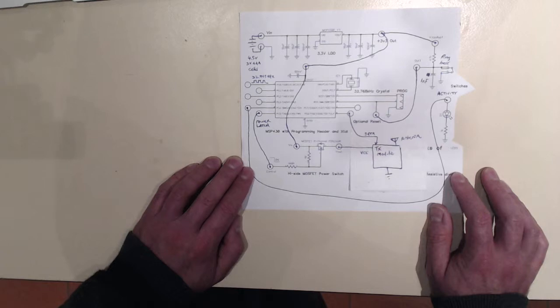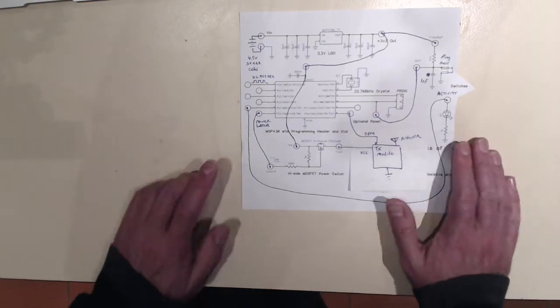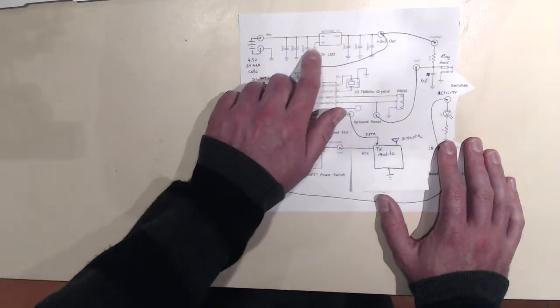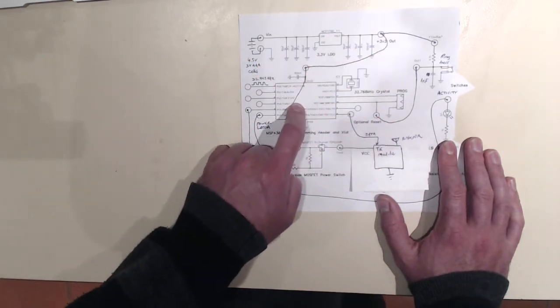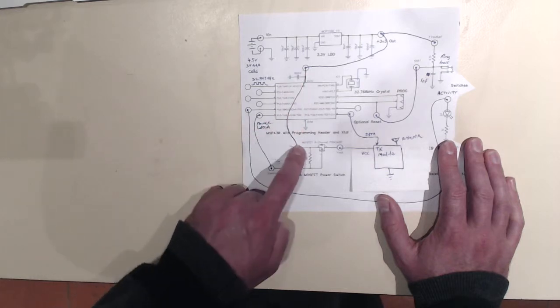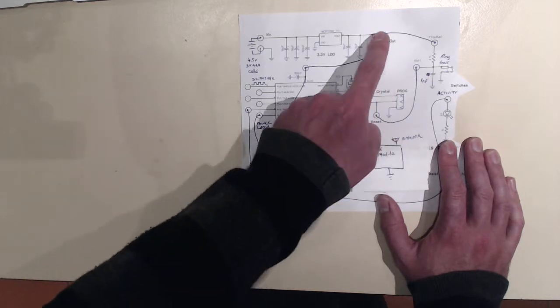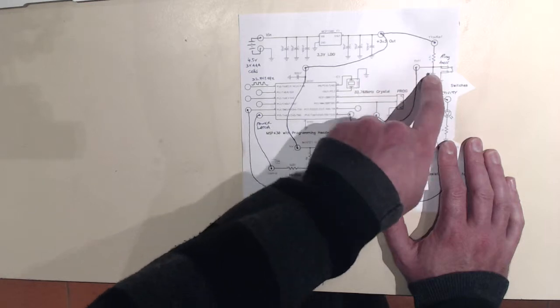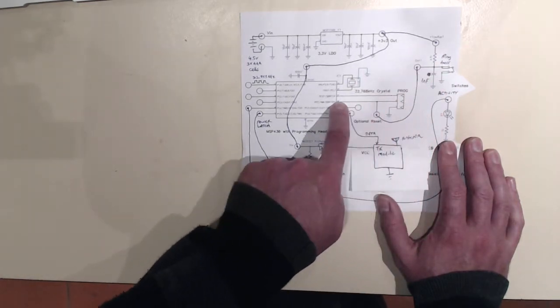Here it is. The doorbell implementation using this little power controller board. Three AAA cells here giving 4.5 volts when fully charged. They feed into the low dropout regulator. This is used to power the MSP430. Also to provide power to the source of the MOSFET. And to provide power to the pull up resistor that's connected to this reset button.